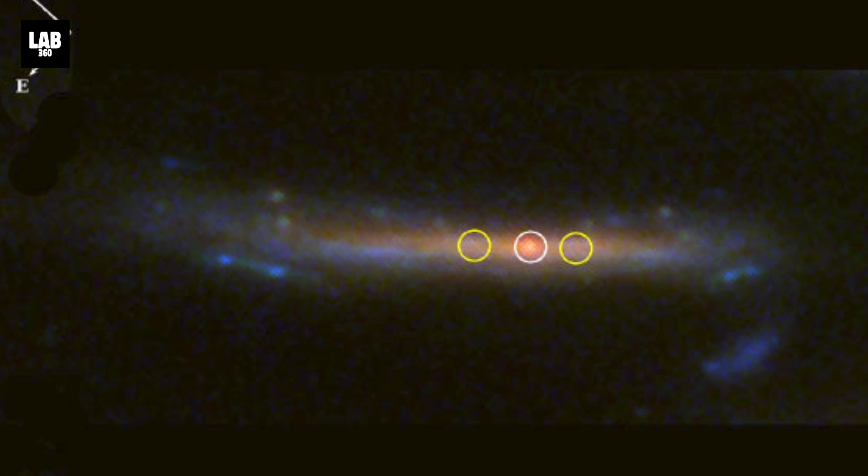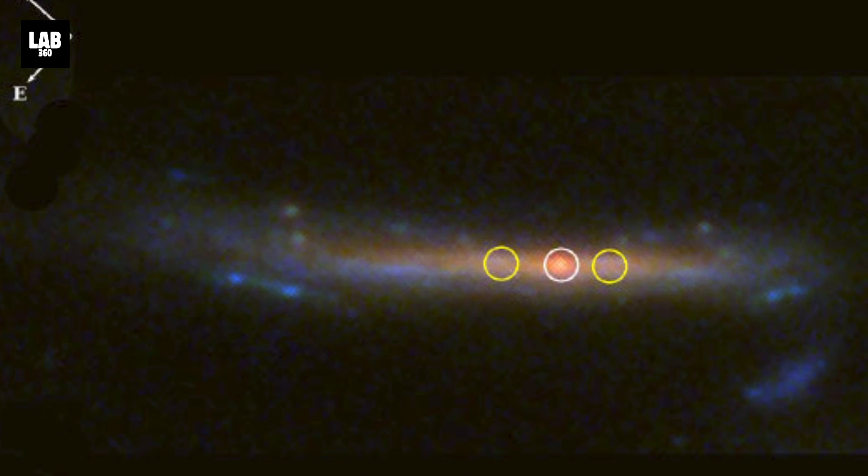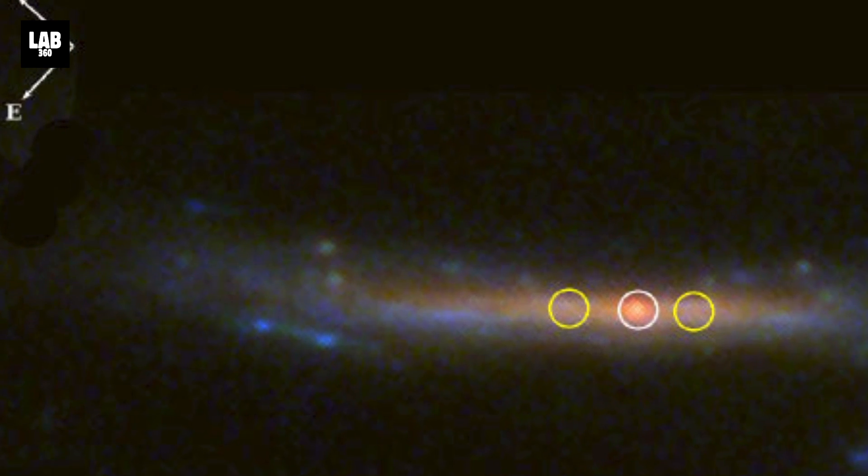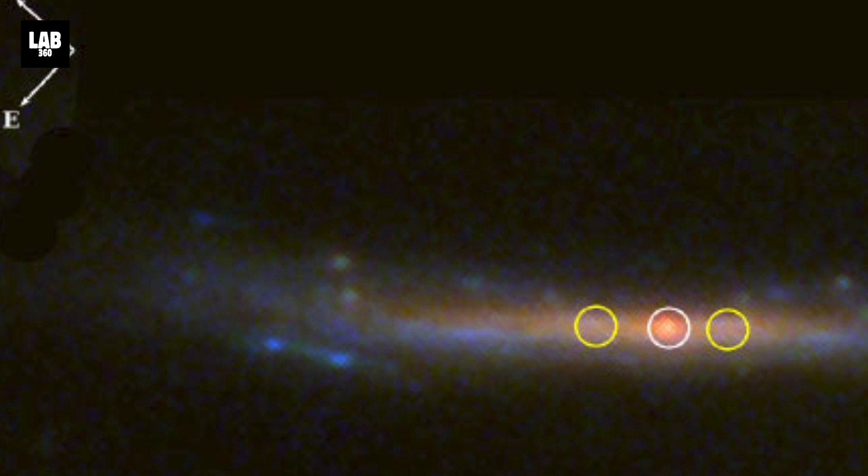Another research team using Webb recently identified a gravitationally lensed star they nicknamed Quiller, a red giant star observed three billion years after the Big Bang.